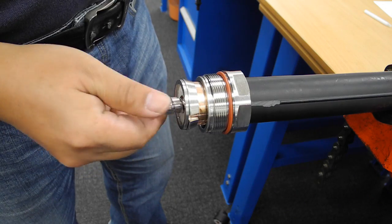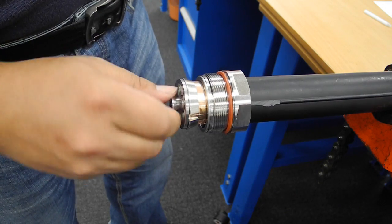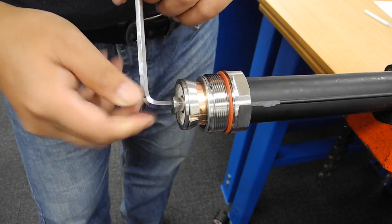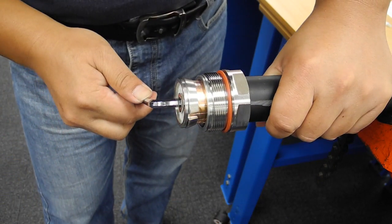Fit the inner assembly stub into the inner conductor. Screw it in finger tight. Then use a 6mm hex key to tighten it the rest of the way.